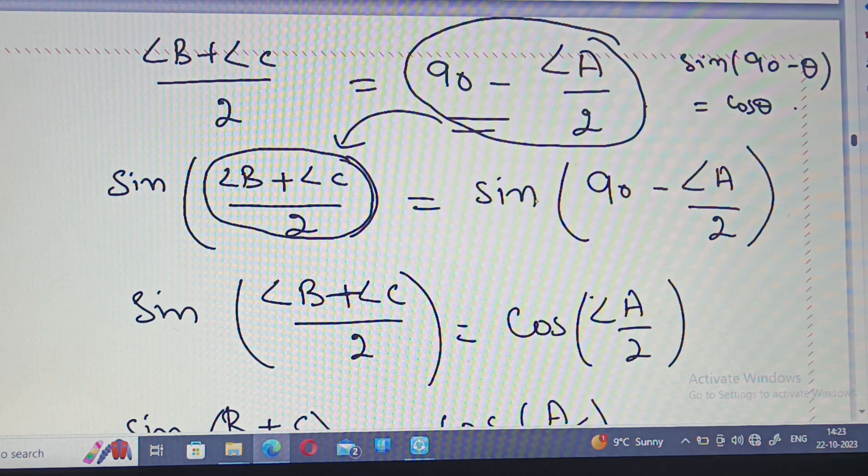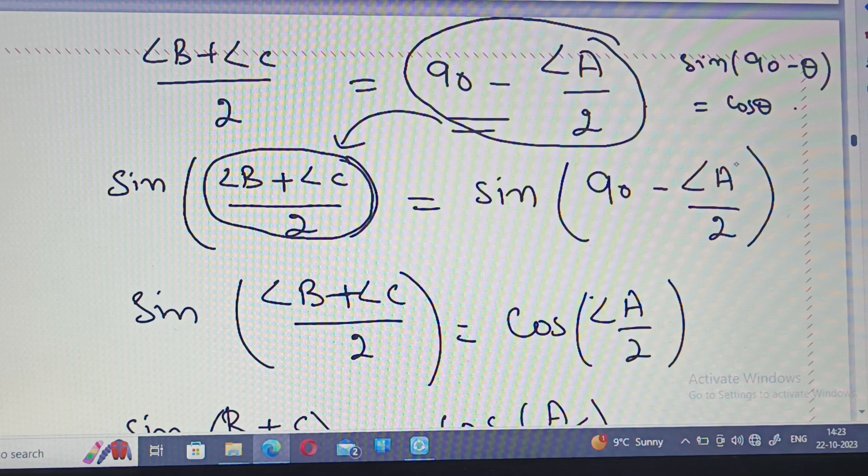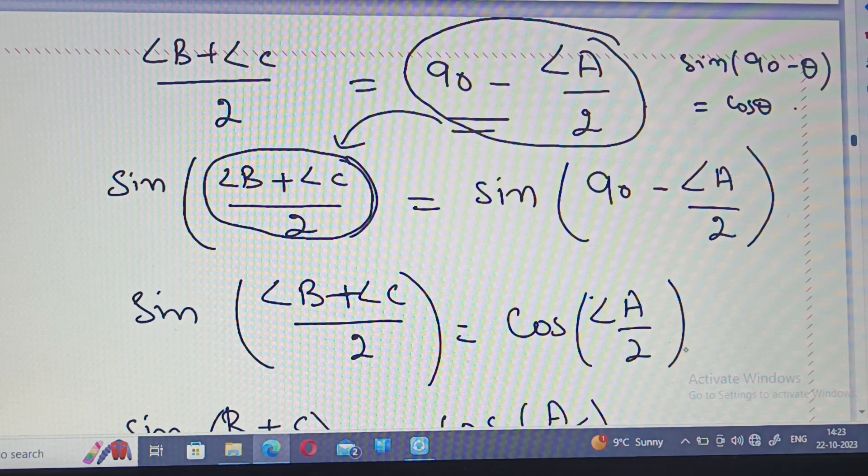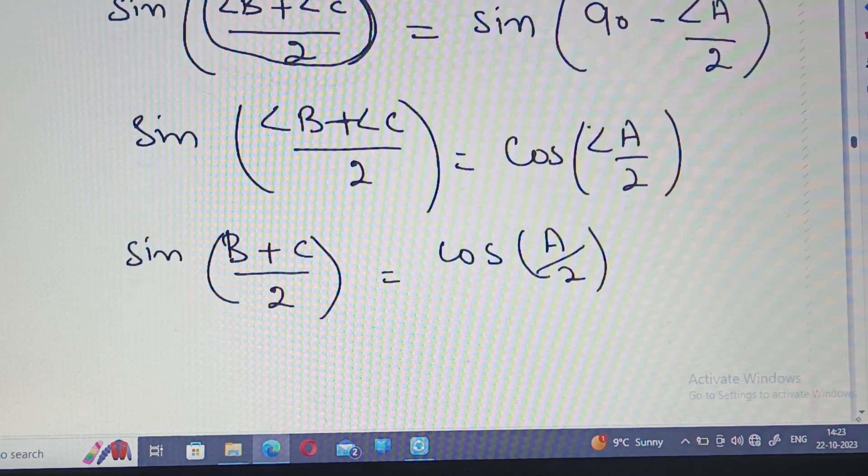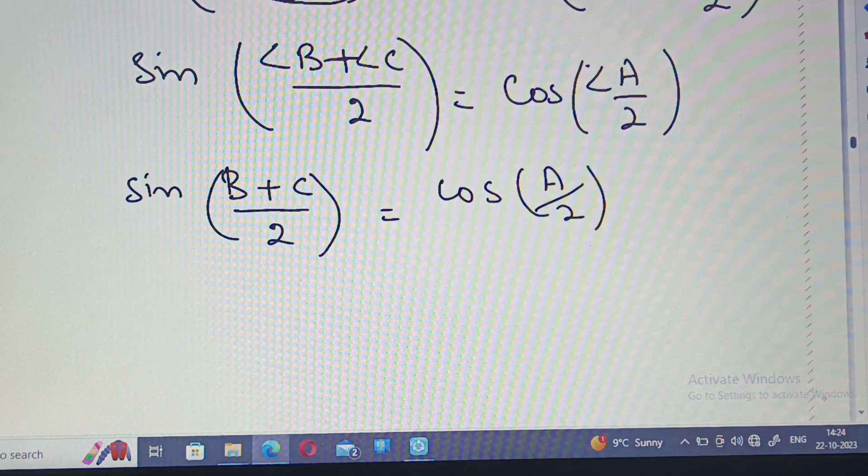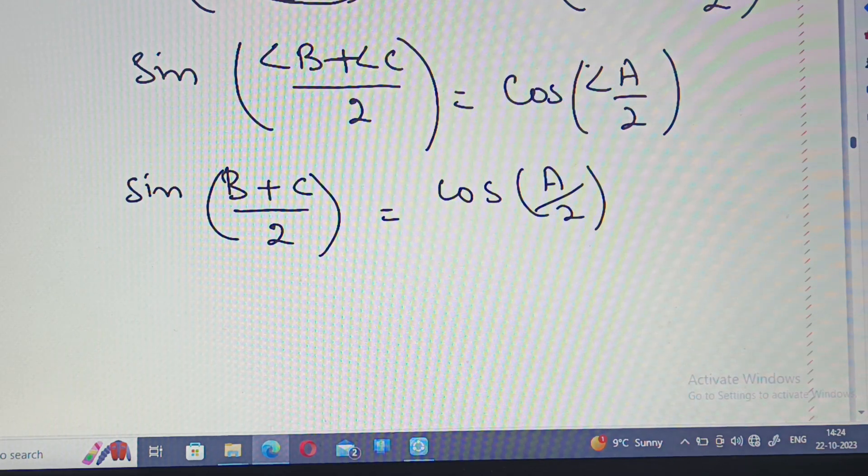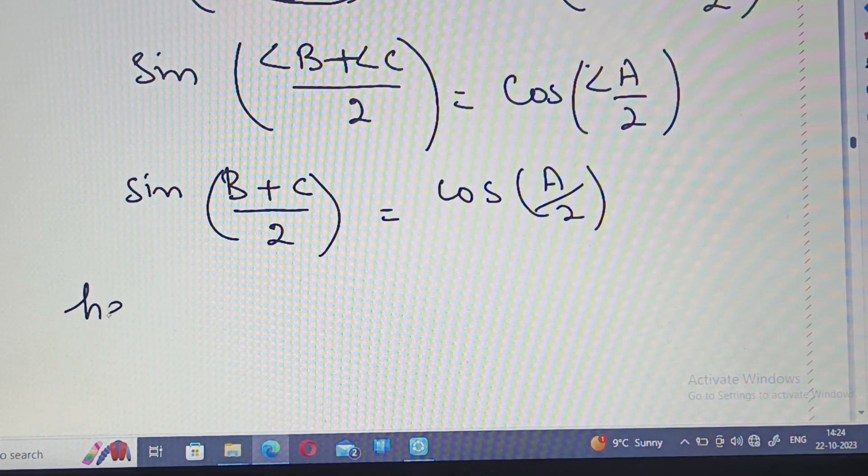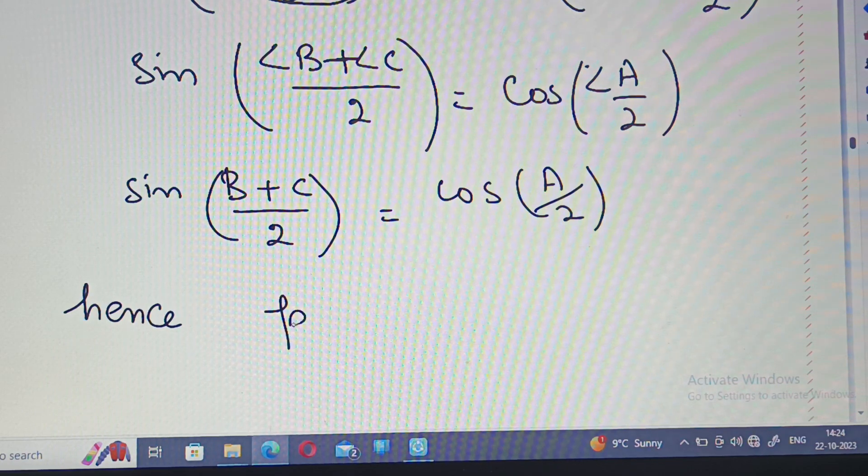They are equal. We used the identity - sine changes to cosine with angle upon 2. That's how we proved it.